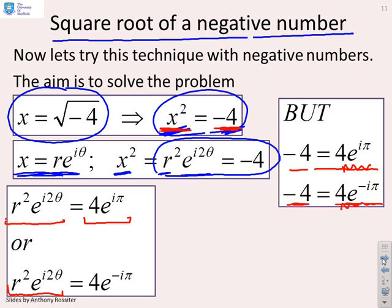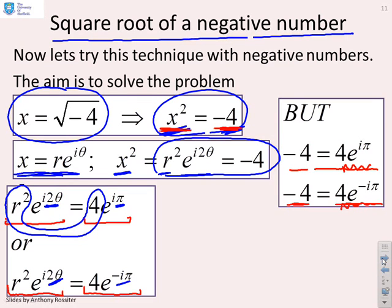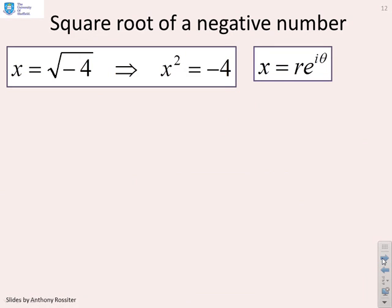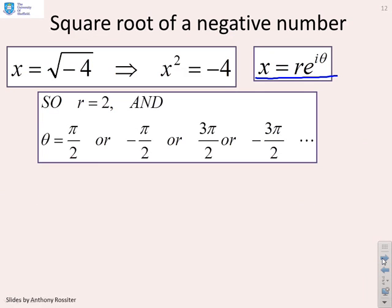Equating both sides: where we had x squared, write r squared e to the i two theta; where we had minus four, write four e to the i pi. Alternatively, for minus four we could write four e to the minus i pi. Equating the moduli gives r squared equals four, so r equals two. Equating the phases gives two theta equals pi, or two theta equals minus pi, so theta equals pi by two or minus pi by two. You could also find additional solutions like three pi by two or minus three pi by two.